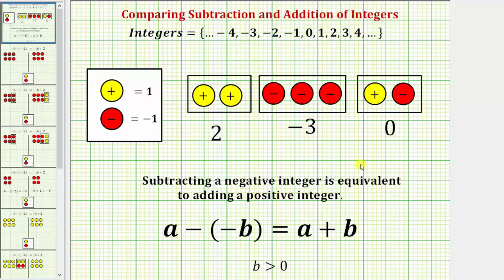Welcome to a lesson on comparing subtraction and addition of integers using integer chips. For review, a positive chip equals positive 1, a negative chip equals negative 1. For example, two positive chips equals positive 2, three negative chips equals negative 3, and a positive chip and a negative chip combine and simplify to zero.